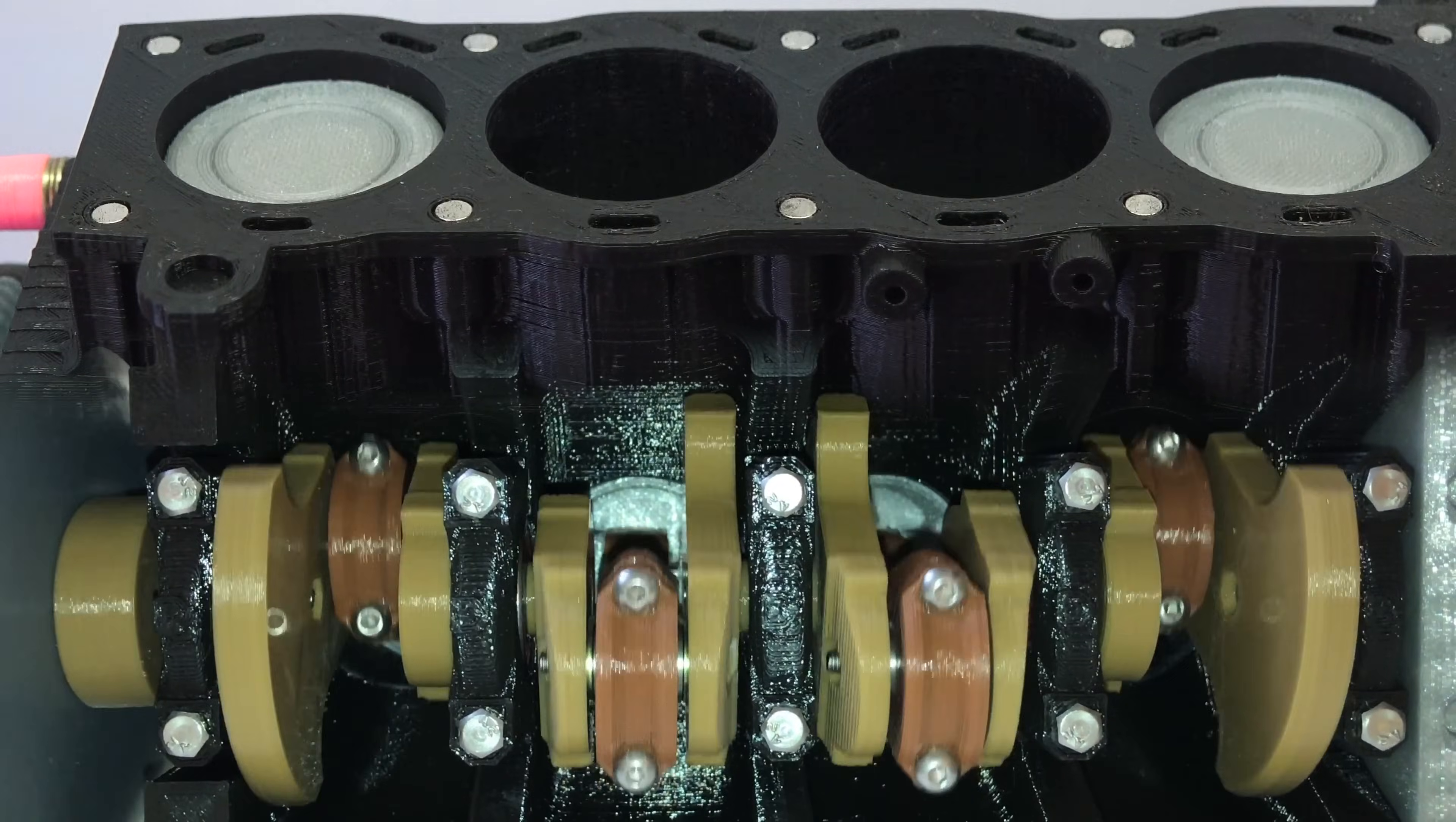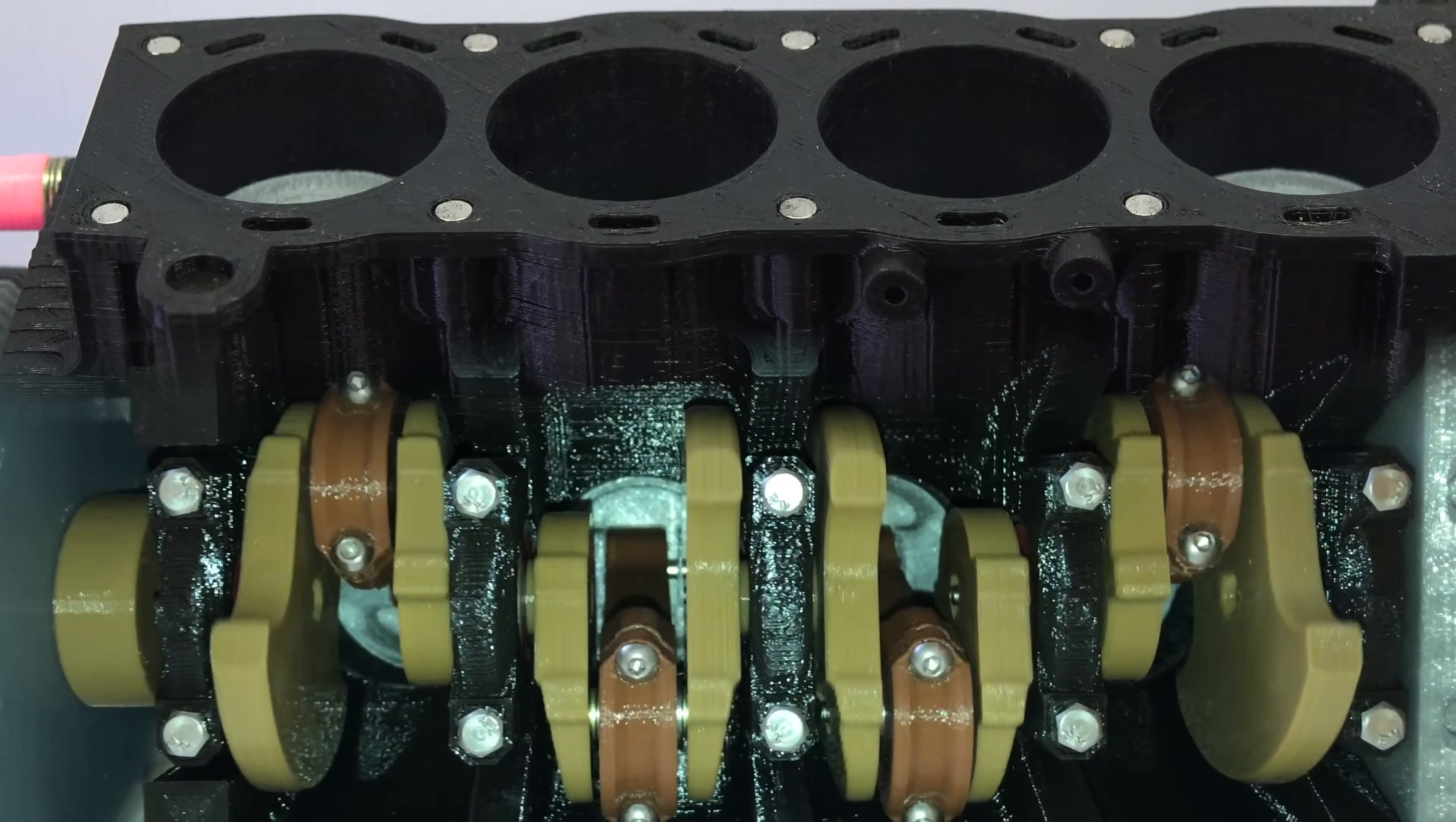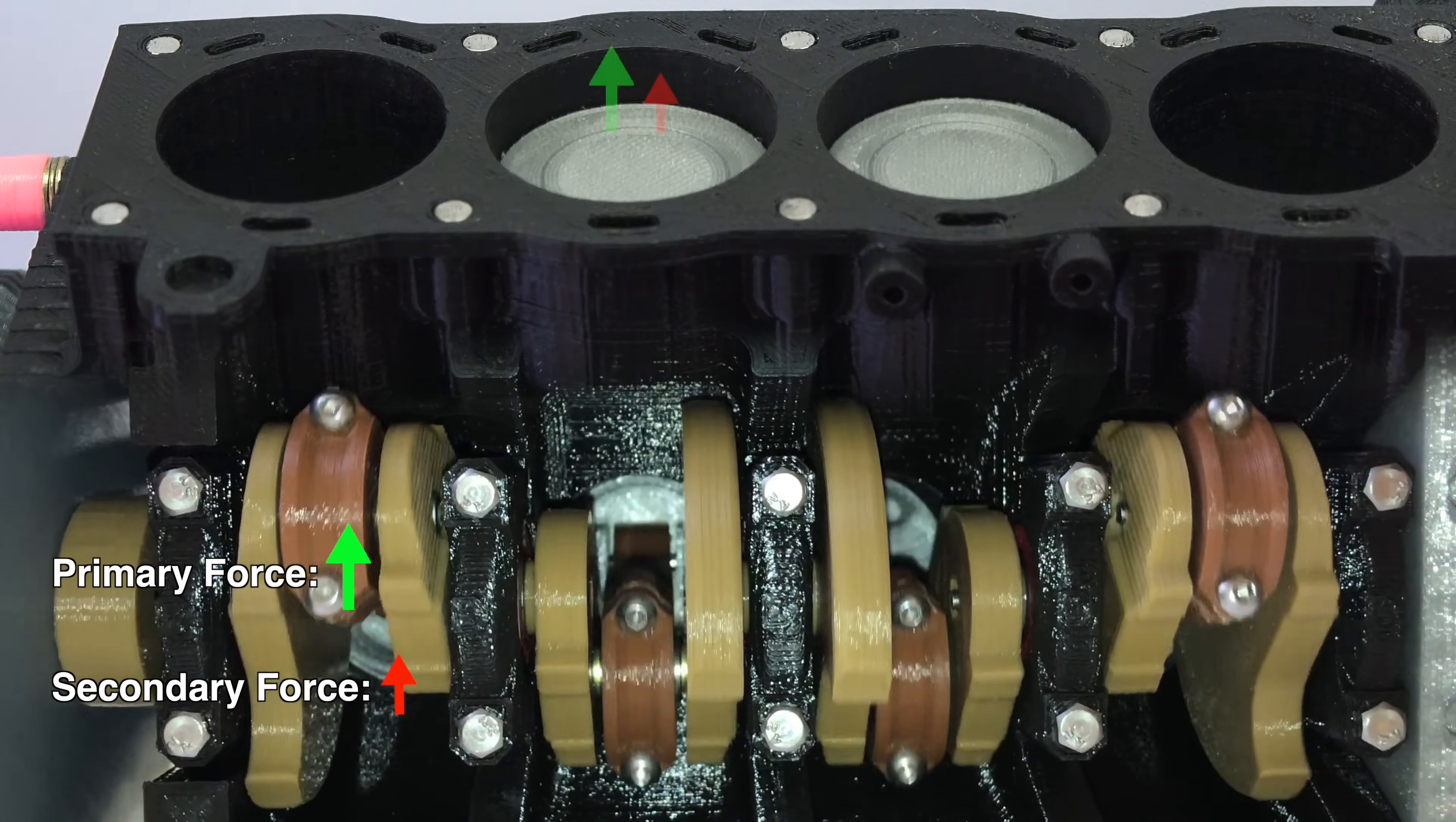Part of the reason this is done is for an even firing interval - you want to fire every 180 degrees so you need at least one cylinder at top dead center for every 180 degrees of crankshaft rotation. But this flat plane crankshaft design is chosen to keep the engine balanced and minimize vibration. You can see that for first order forces, the pistons moving up and down opposite one another balance each other out.